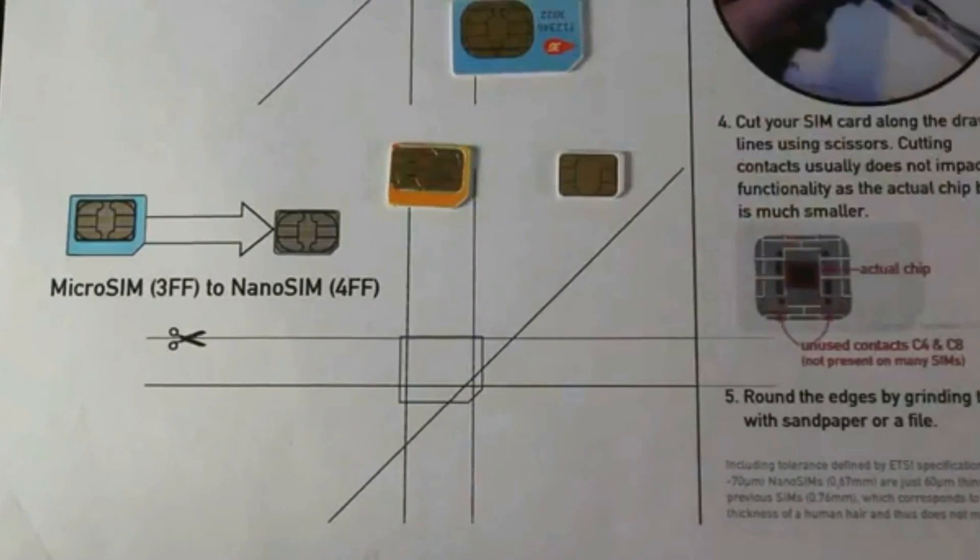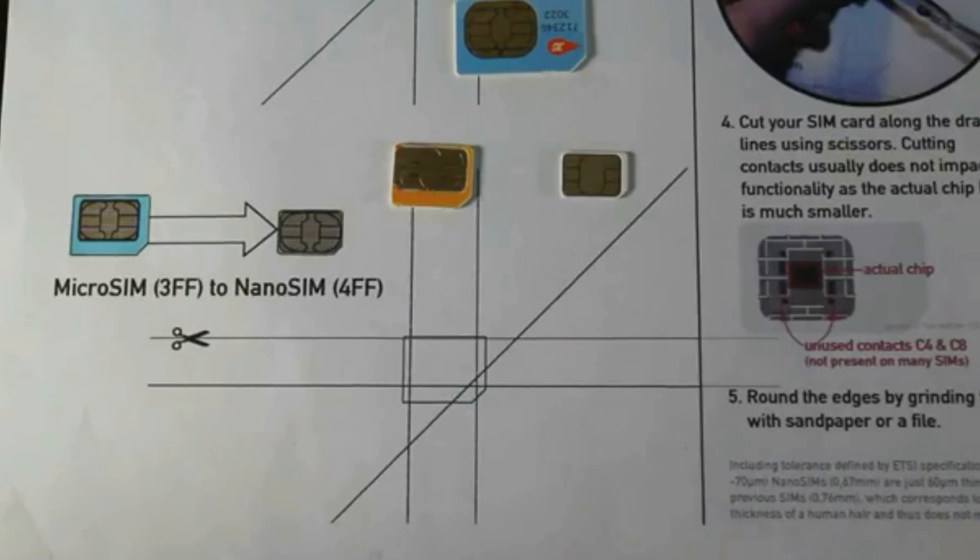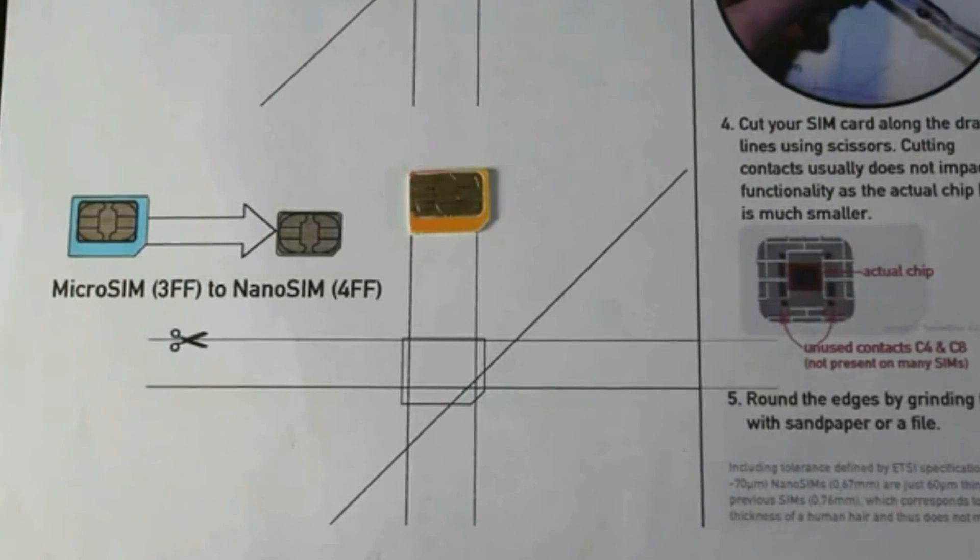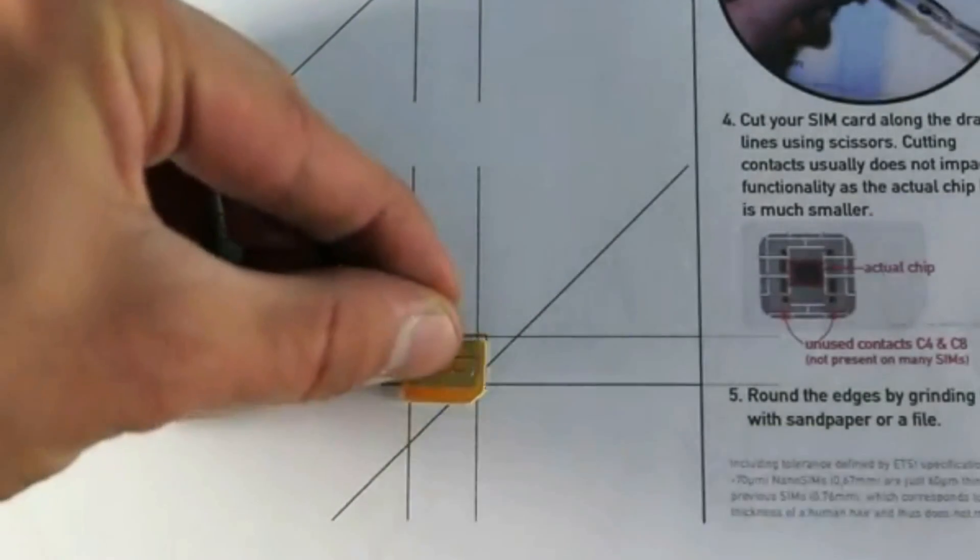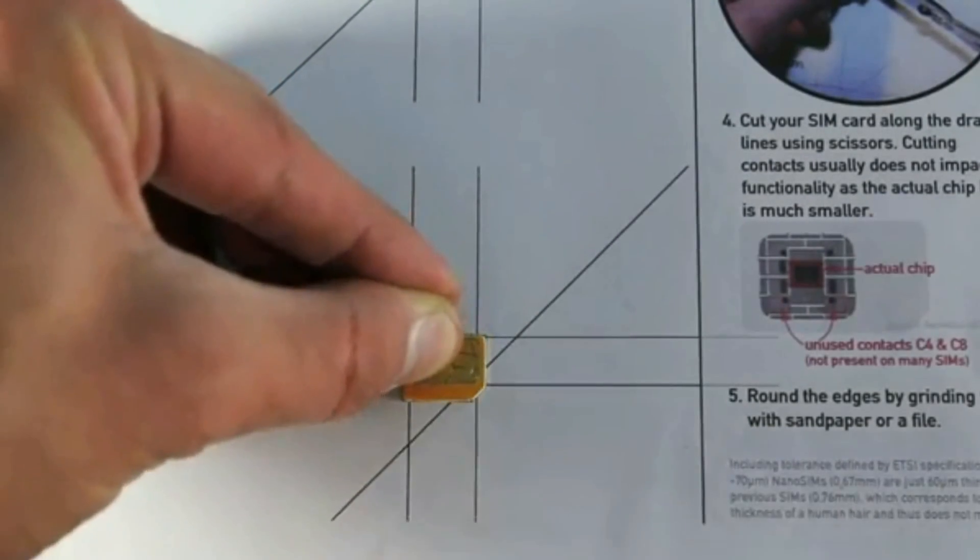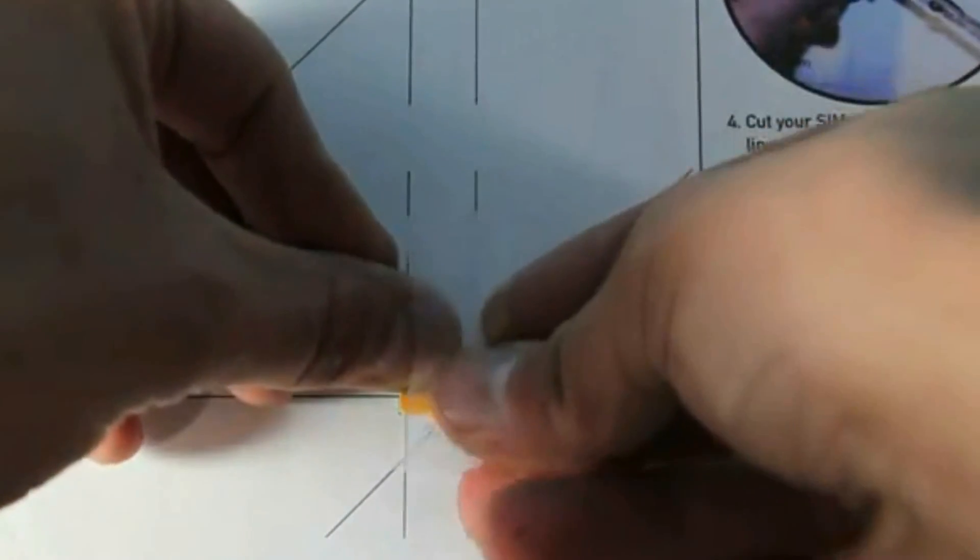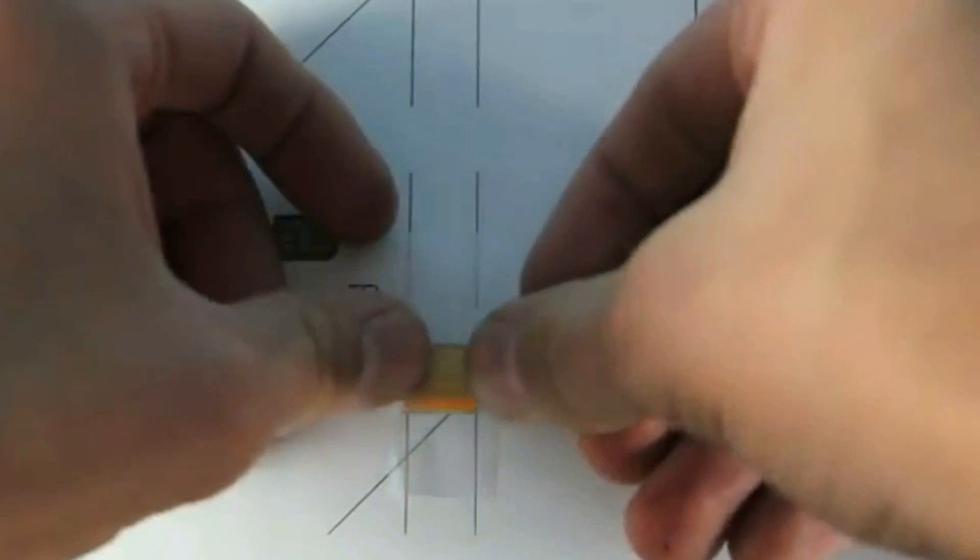Depending on which size SIM card you are cutting, make sure to center it with the contacts facing up in that little diagram. Go ahead and take a piece of tape and cover the SIM card. Make sure again that it is centered in there and tape it on.